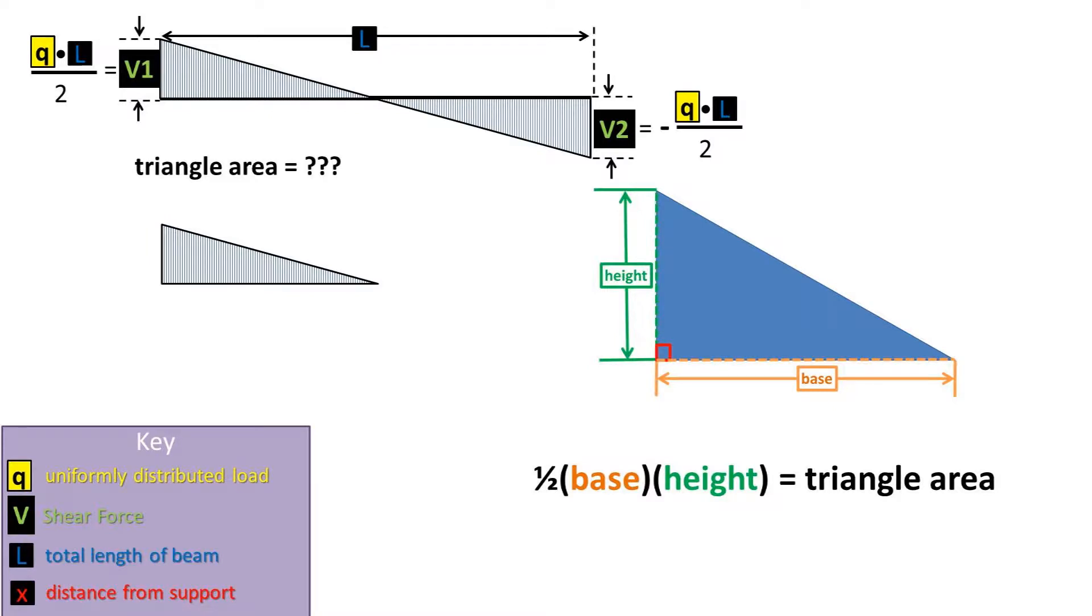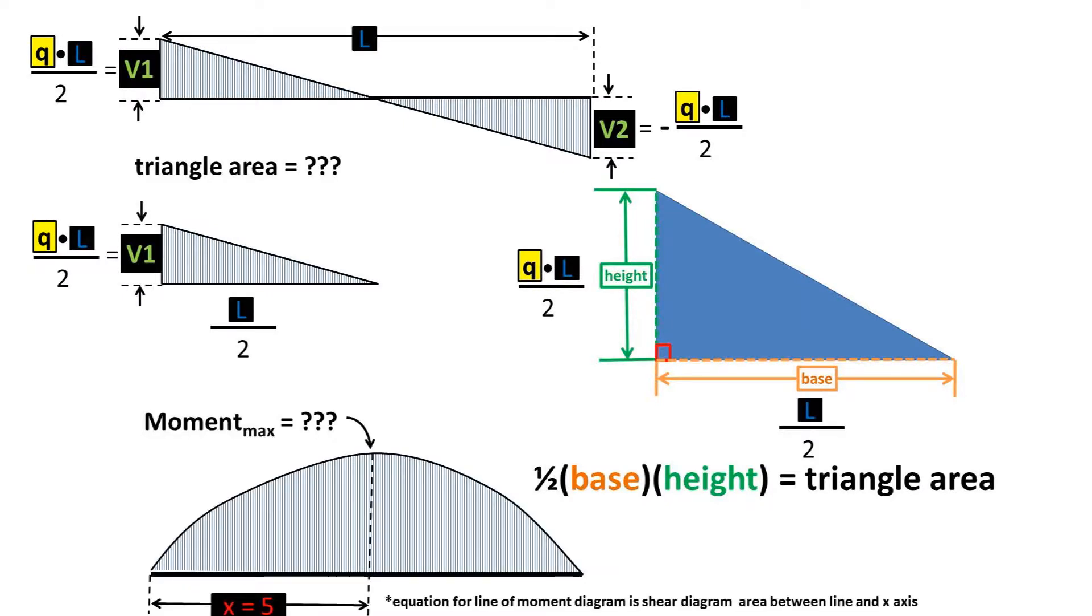We want to find the area of the triangle above the x-axis. The area formula for a triangle is 1 half base times height. We have a height in our case of q times l over 2, and a base of half the length because the triangle is above the x-axis until half of the length of the beam. This means that the area is adding up to get to the max point up until half the length of the beam.